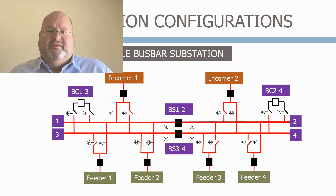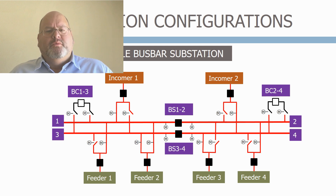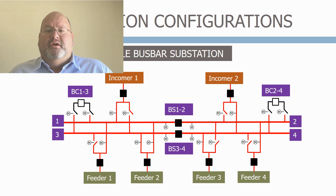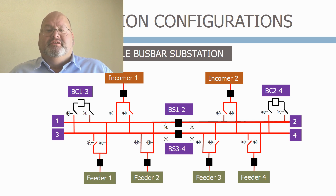Additional bus bars are added to give the network operator more options to connect the incomers and feeders together. Having one bus bar per incomer is a common configuration. To provide even more flexibility the bus bars are connected together using bus sections and bus couplers. Ideally it should be possible to connect any feeder to any incomer to balance the loads on the network and allow flexibility. When a fault occurs all the circuits need to be taken out of service for maintenance.